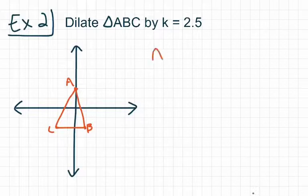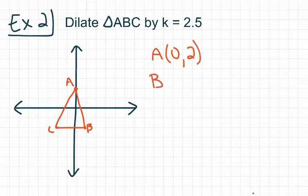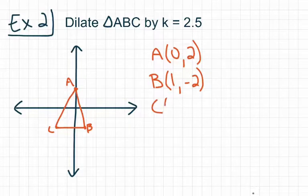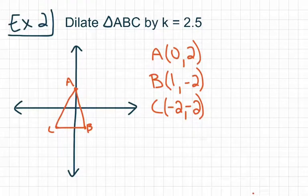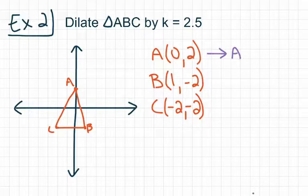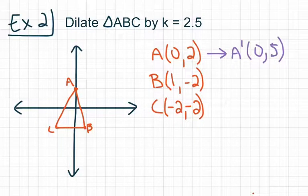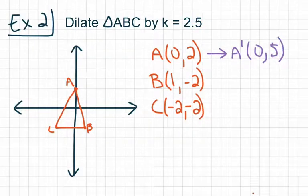Point A is at 0, 2. Point B is at 1, negative 2. And point C is at negative 2, negative 2. We're going to take all six of these numbers and multiply them by our scale factor of 2.5. For A prime, multiplying 0, 2 by 2.5: 0 times 2.5 gives 0, and 2 times 2.5 gives 5. So A prime has coordinates at 0, 5.